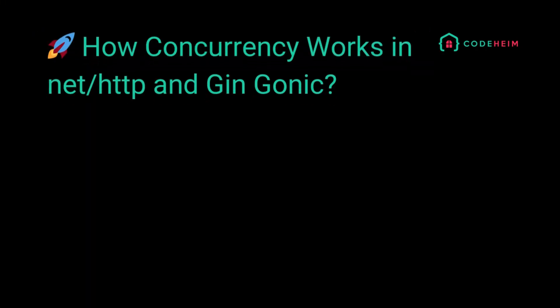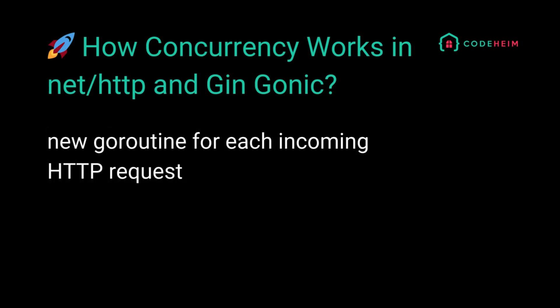Most developers use NET/HTTP or other frameworks to build web applications. How does concurrency play a part there? Do we need to explicitly take care of simultaneous requests? Go's NET/HTTP package automatically starts a new goroutine for each incoming HTTP request, allowing multiple requests to be handled concurrently. This means your server can respond to many clients simultaneously, without blocking, even if some requests take longer than others.